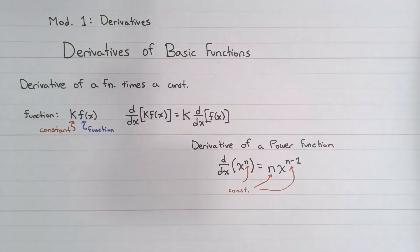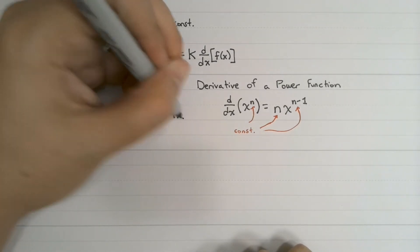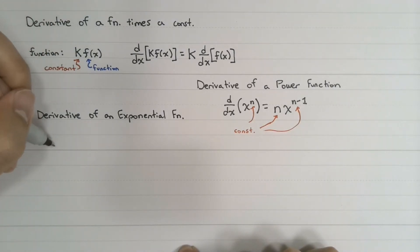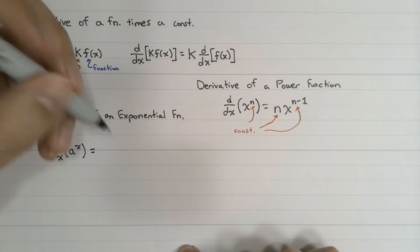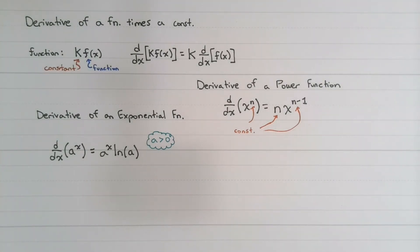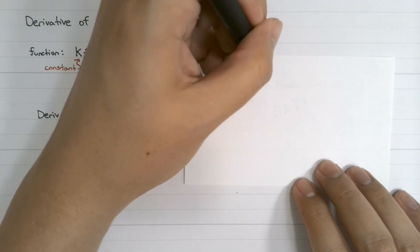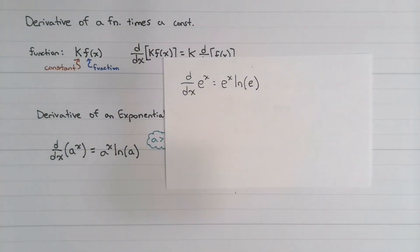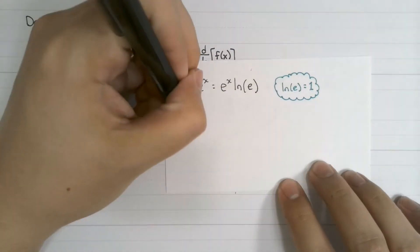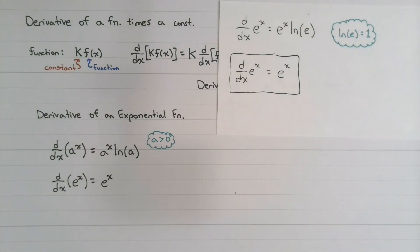Now let's look at exponential functions. Instead of having x to the power of a constant, let's consider a constant elevated to the power of x. The derivative with respect to x of a to the power of x is a to the power of x times the natural logarithm of a — this applies for a greater than 0. For example, the derivative of e to the power of x is e to the x times the natural logarithm of e. Since ln(e) equals 1, the derivative of eˣ is simply eˣ. This is very useful because exponential functions are very common in fluid mechanics.